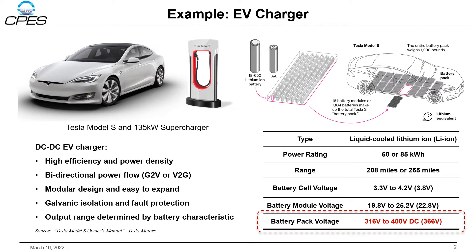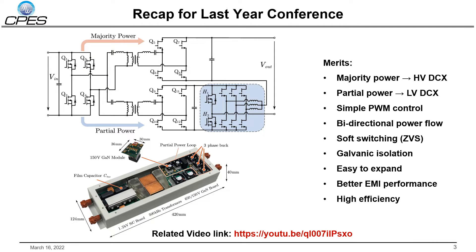To meet the battery voltage and achieve high efficiency and density, we have presented a partial power converter at last year's CPAS conference. The core concept is to push the majority of power through the HVDCX and only partial power will go through the LVDCX. Since just partial power is processed to regulate the output voltage, the converter can achieve very high efficiency. Due to the low circulating current and the full range ZVS, the CLLC resonance converter has been adopted as the HVDCX.